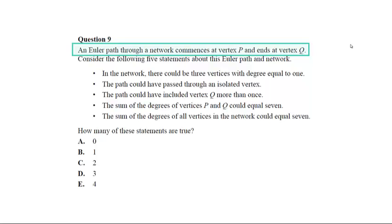So we know that any Euler path where it starts and ends at different points, those two points or vertices will be of an odd degree. So now we need to consider, knowing that, the next five statements.